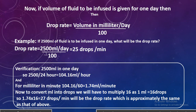Now, if the volume of fluid to be infused is given for one day — in the previous examples it was given per hour — then we use a different simple statement: volume in mL per day divided by 100. For example, if 2,500 mL of fluid is to be infused in one day, what will be the drop rate? 2,500 mL divided by 100 comes out to be 25 drops per minute.